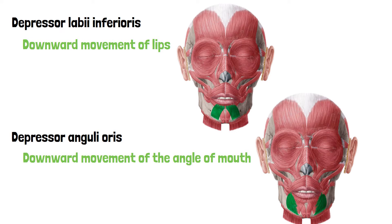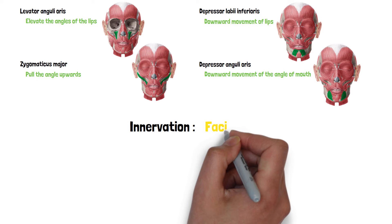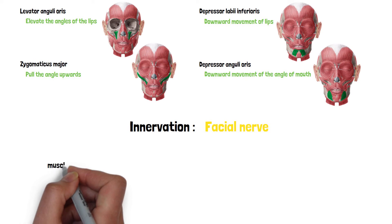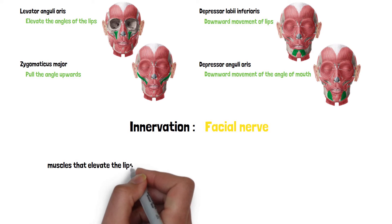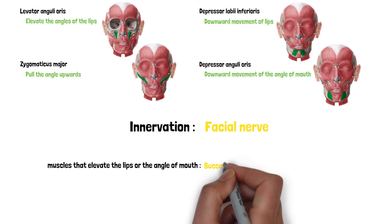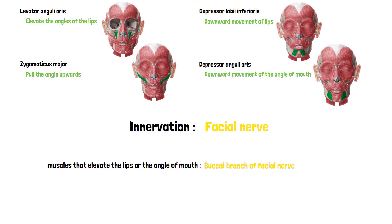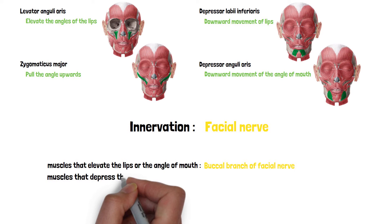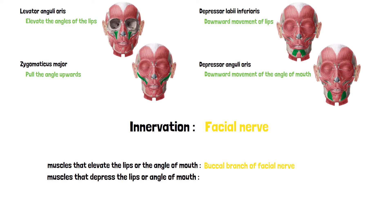All of these muscles are included in the muscles of the face and are innervated by the facial nerve. One important distinction in innervation is that the muscles that elevate the lips or the angle of the mouth are innervated by the buccal branch of the facial nerve, while the muscles that depress the lip or the angle of the mouth are innervated by the marginal mandibular branch of the facial nerve.